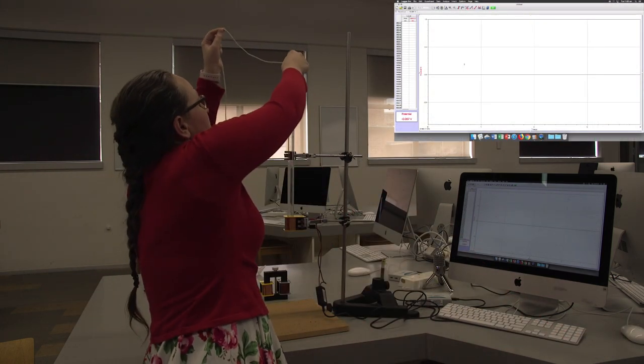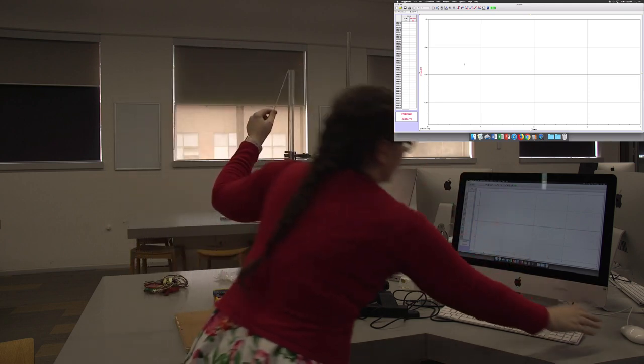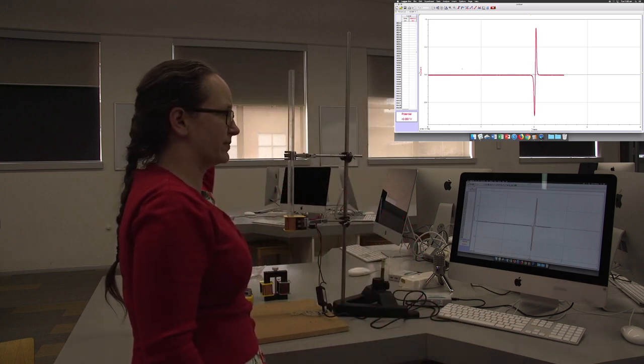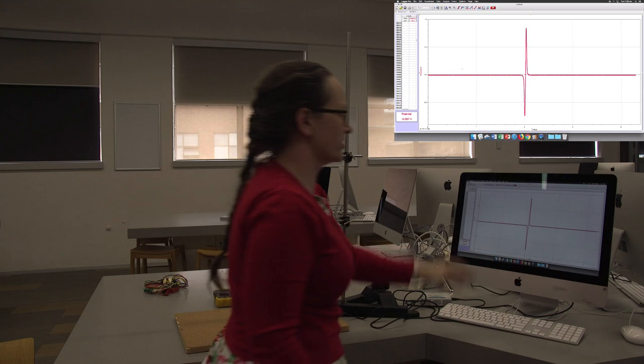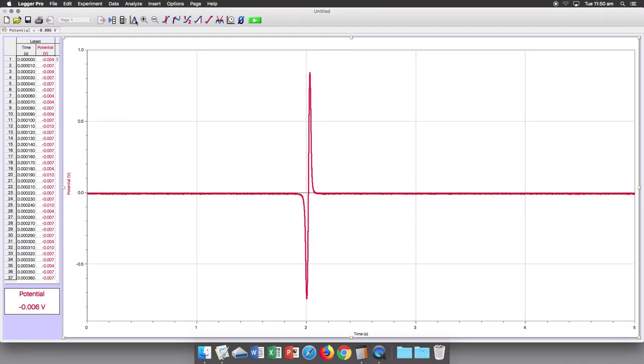Once you've done that, you're ready to start recording. Put your mass at the point you want to drop it from. Hit your record button. And then when it's recording, drop your mass. In order to analyze this, it helps to auto-scale it, so hit auto-scale.